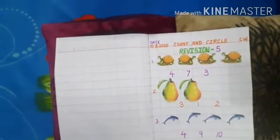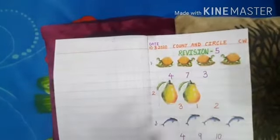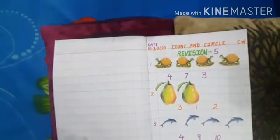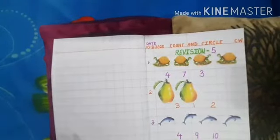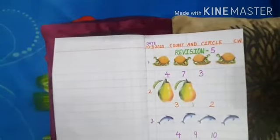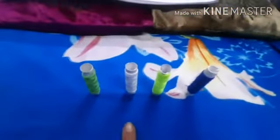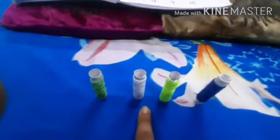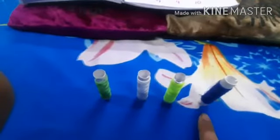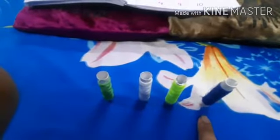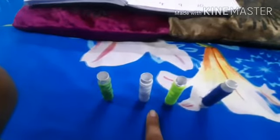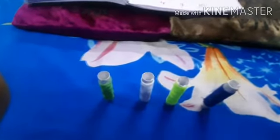First, before that, we do one activity related to this topic. Are you ready? See here — how many threads are there? Count it: 1, 2, 3 and 4. How many threads are there? 1, 2, 3 and 4.